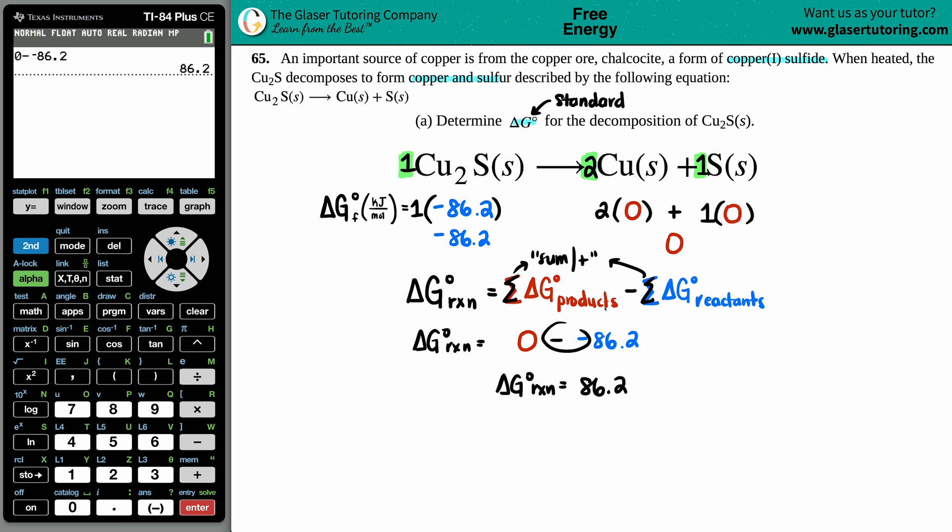Units here: since we multiply by the coefficients, those are your moles, so the moles will cancel out and you're left with just kilojoules. That is the first part of this question: determine the ΔG° = 86.2 kJ. It's a non-spontaneous reaction, and that's it for this part.